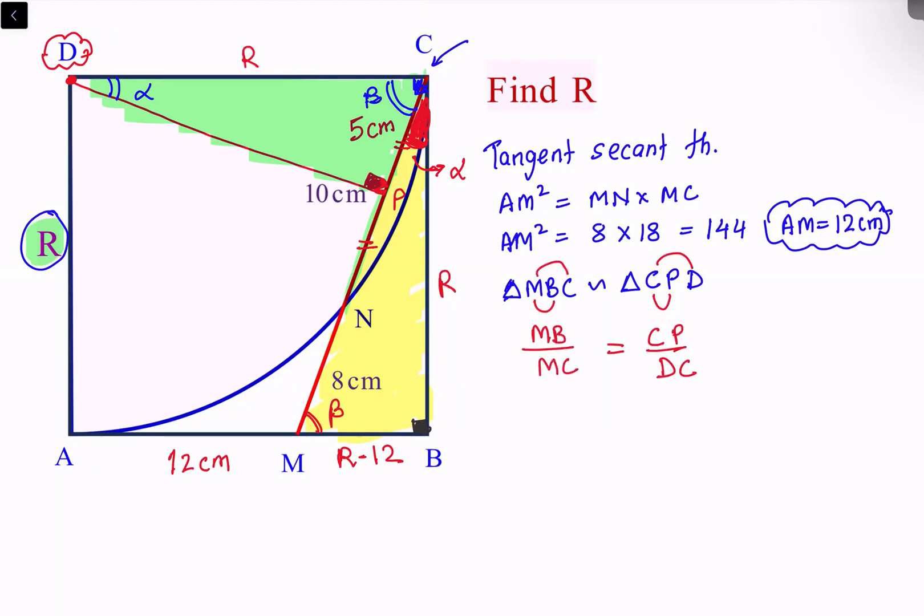Now let's put the values. MB is R minus 12. MC is 10 plus 8, that is 18 centimeters. CP is 5 centimeters, and DC is R.